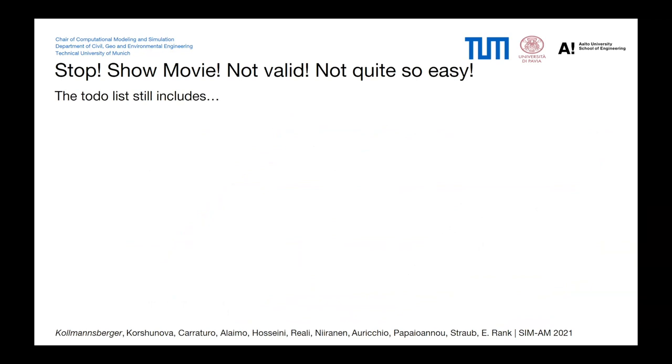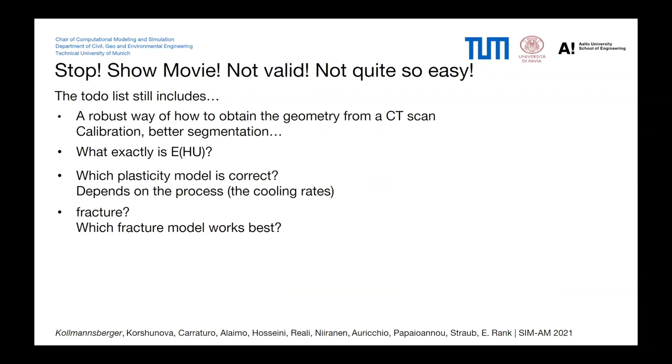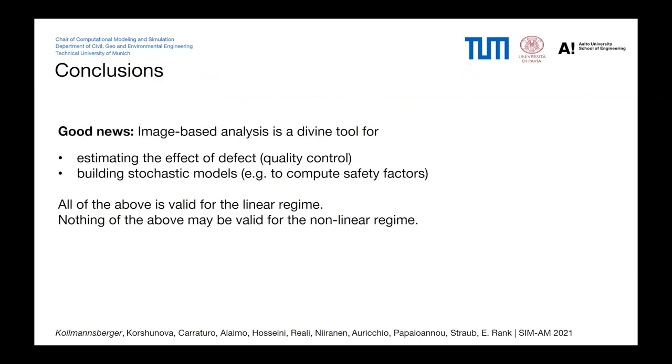The story is not quite so easy, because there are still a lot of to-dos. We need a robust way to obtain the geometry from a CT scan. This is non-trivial. We need somehow a relationship of the Hounsfield unit giving us an elastic modulus. What kind of plasticity model is actually correct? We have had no microstructure variation in there. That of course depends on the process and the cooling rates. Fracture is definitely something that we would need to look at. Fatigue surely depends on the surface roughness, grain formation, pre-stresses, which depend on the process and so on. And what about the robustness of the solver? You need solvers that can handle 10 billion degrees of freedoms in non-linear computations on these complicated structures, and they are not as robust as we would like to be in these kinds of simulations.